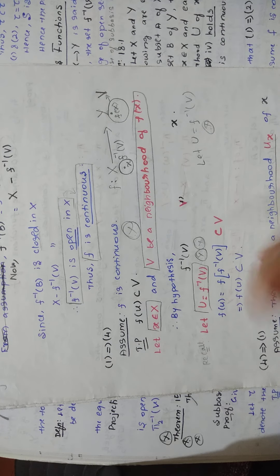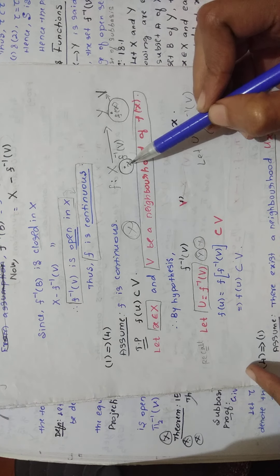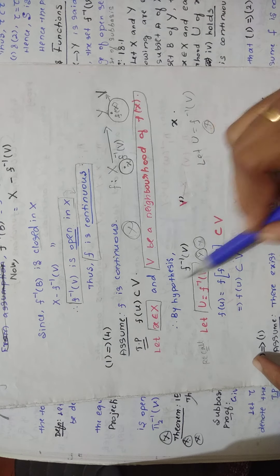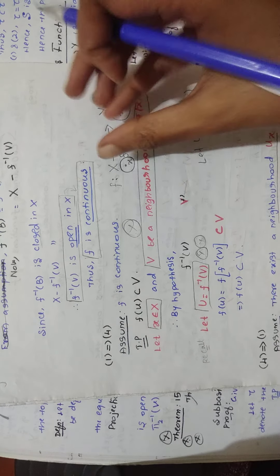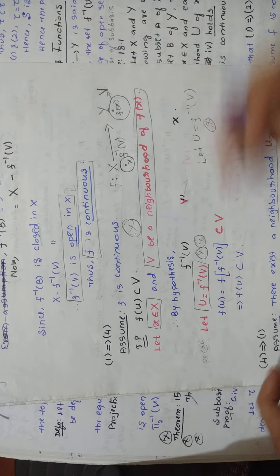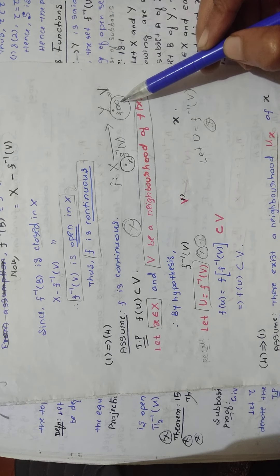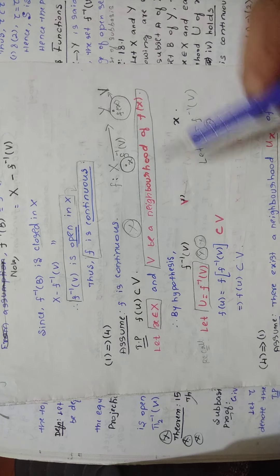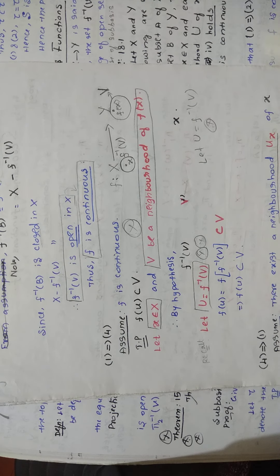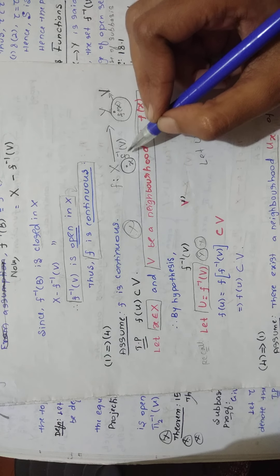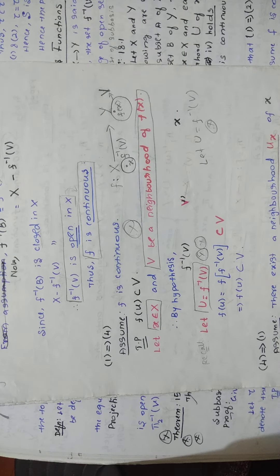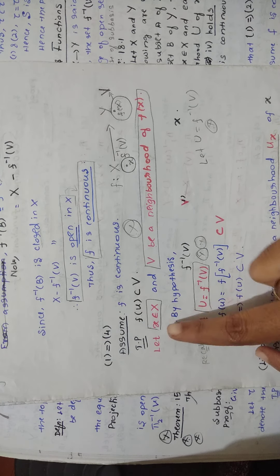This is the basic thing you have to know. In the first line of the proof, you take a point x belonging to capital X. Let x belong to capital X and let V be a neighborhood of f(x). By the hypothesis — our assumption that f is continuous — we know that the inverse image of every open set is open. Since V is a neighborhood, it is an open set, so f-inverse of V is also open in X containing the point x.